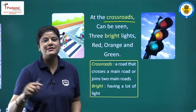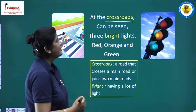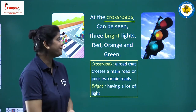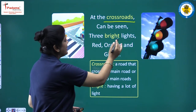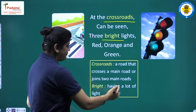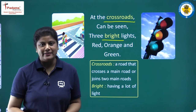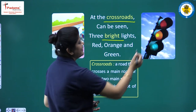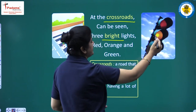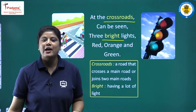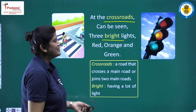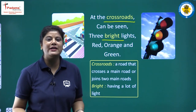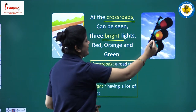यहां से तीन या चार रास्ते निकलते हैं। At the crossroads can be seen — हम crossroads पे क्या देख सकते हैं? Three bright lights. Bright means having a lot of light — चमकीली। Three bright lights हमें दिखाई देती हैं crossroads पे — red, orange and green. Have you seen this? These can be seen easily at any crossroads.